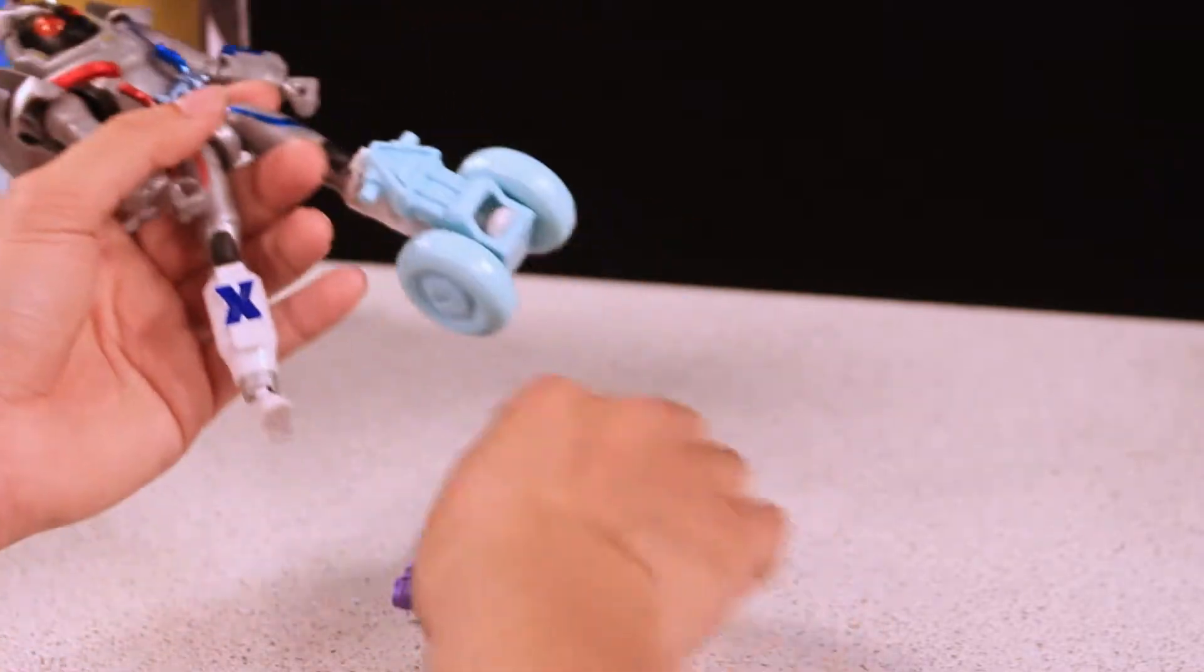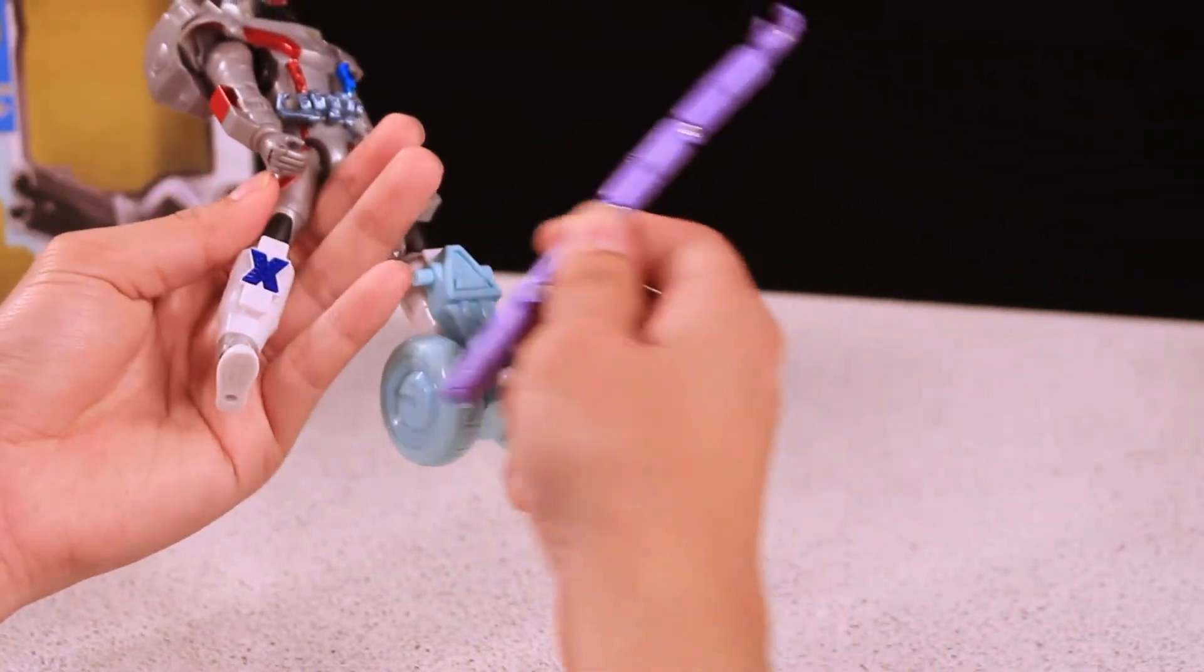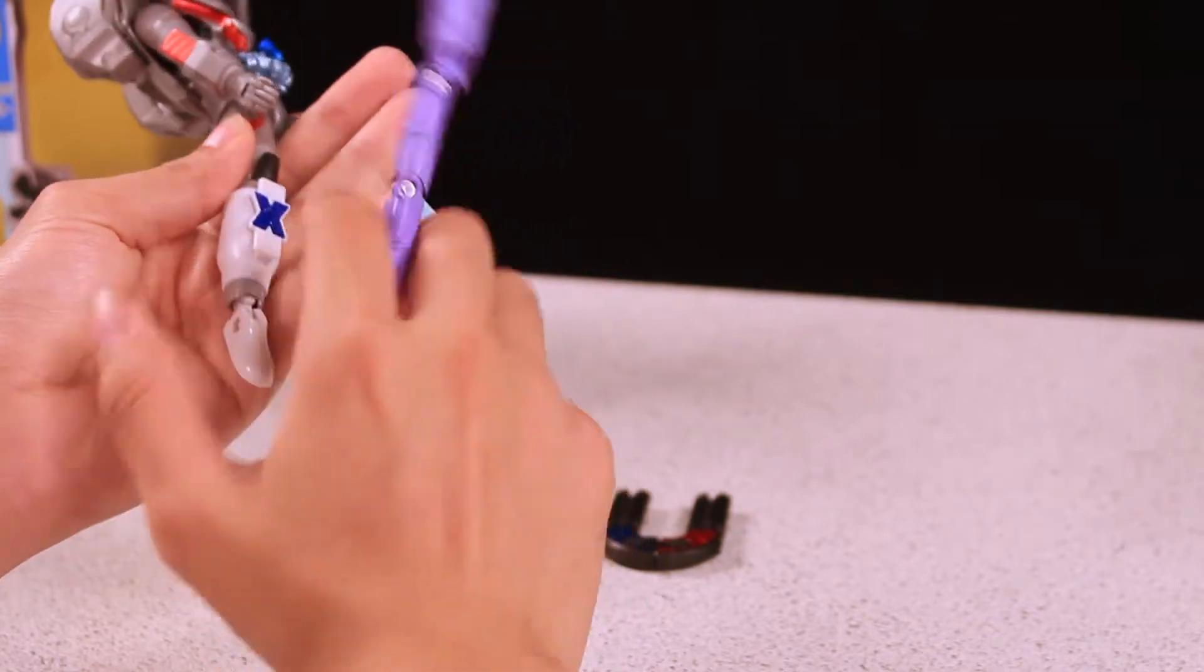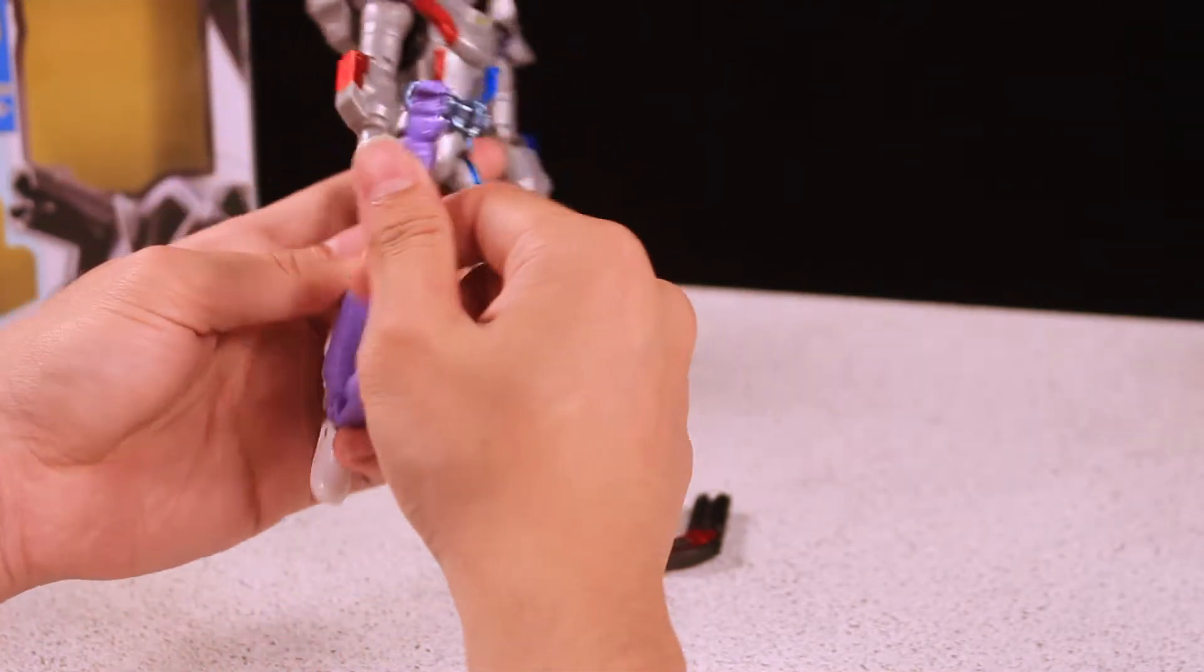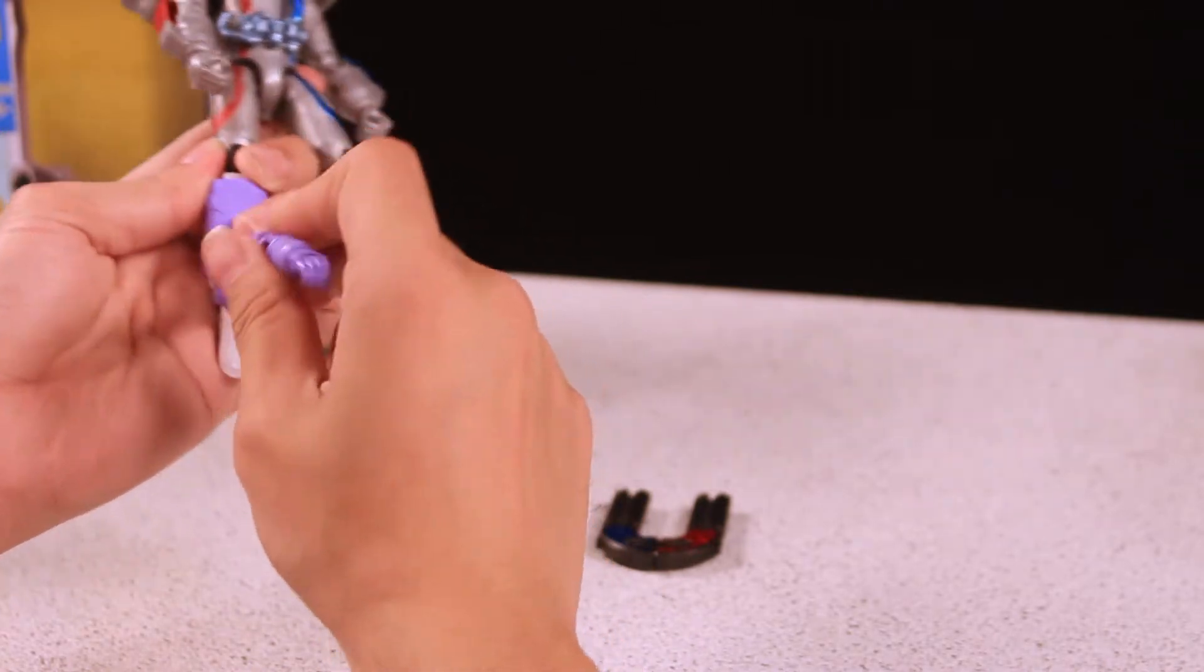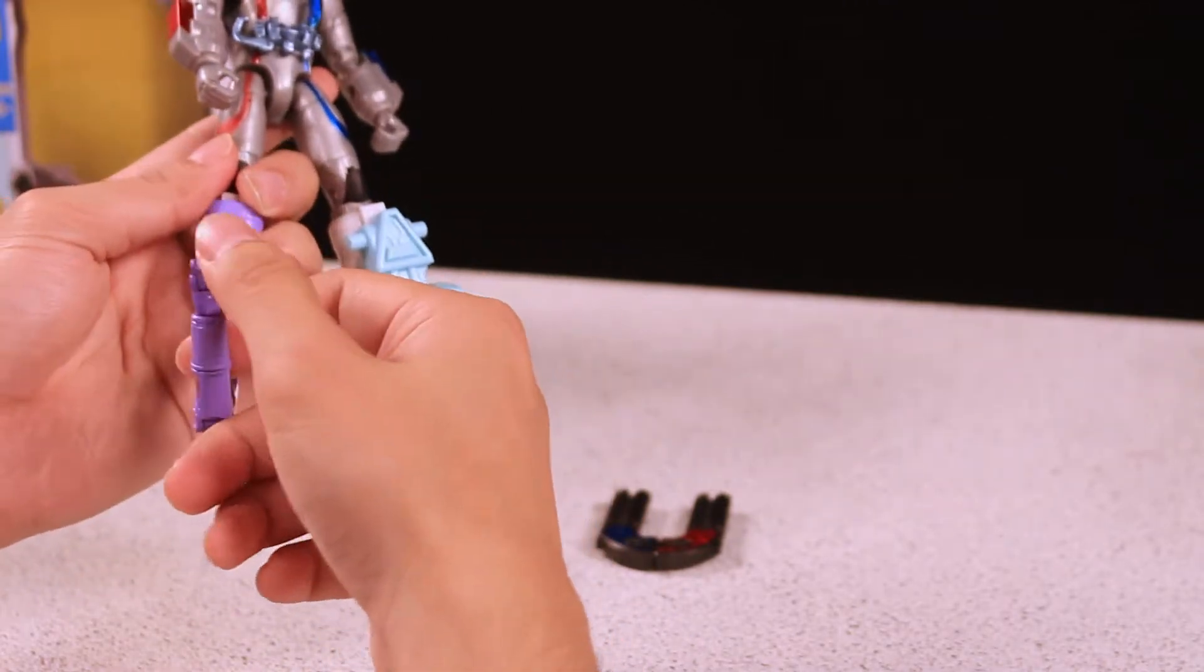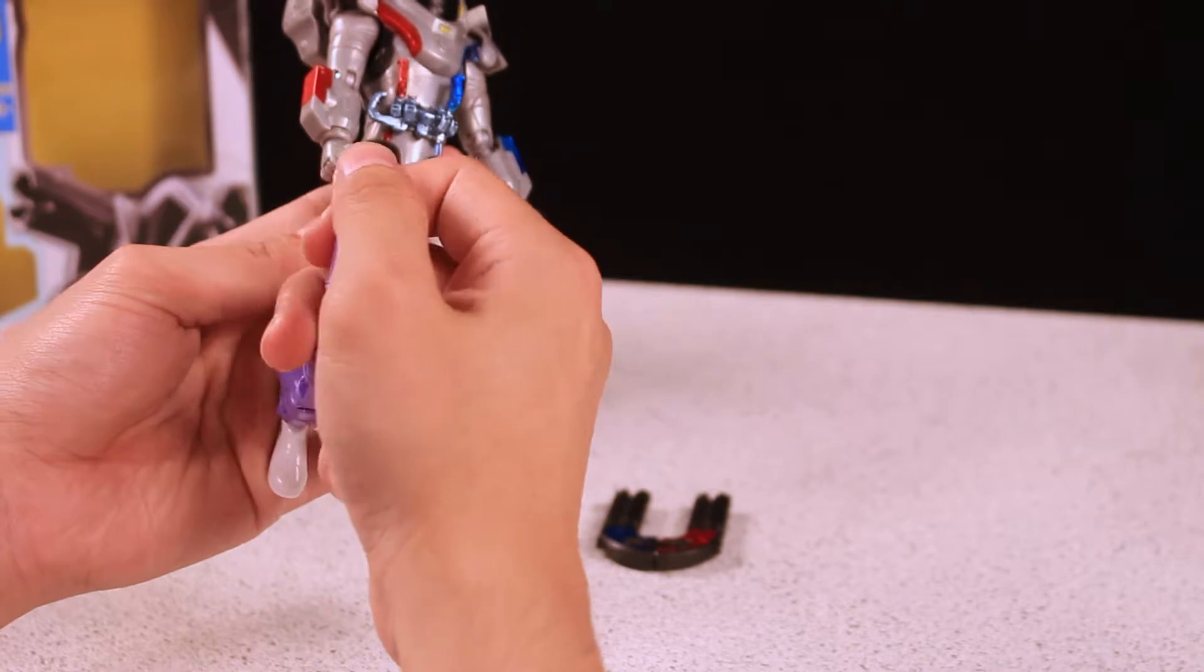For the other one, this is the hand module. Just slide it like this, and you have a hand module. You can grab things with the joint here.